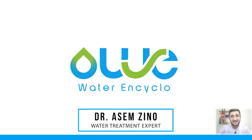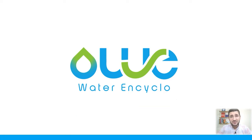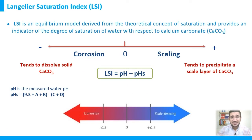Welcome back. In this session we'll discuss one of the most important water chemistry parameters used in day-to-day activities in cooling systems, desalination plants, and others, which is called LSI — the Langelier Saturation Index. By definition, LSI is an equilibrium model derived from the theoretical concept of saturation and provides an indicator of the degree of saturation of water with respect to calcium carbonate scale or salt.